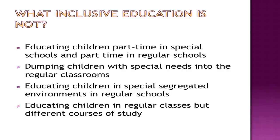Similarly, dumping children with special needs into regular classrooms with no curriculum flexibility and no other arrangements made for them is not inclusive education — the purpose is not just to attain presence, but also achievement and participation. The third condition that is not inclusive education is educating children in special segregated environments within regular schools, as children are not in the same classroom. Educating children in regular classes but with different courses of study is also not inclusive education.